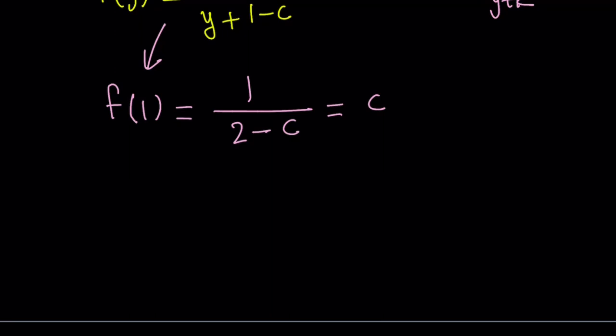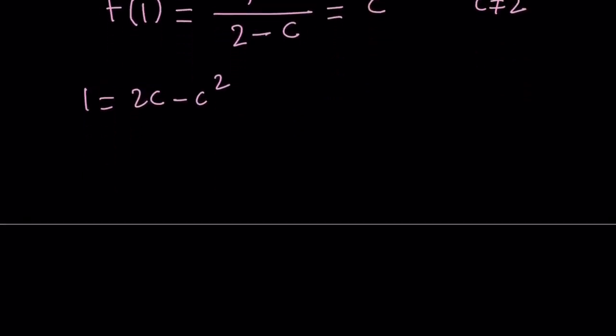What does that give us? It gives us a really nice equation. First, we have to note that c ≠ 2. Under those conditions, we can multiply both sides by 2 - c, and that gives us 1 = 2c - c². We can put everything on the left-hand side: c² - 2c + 1 = 0. Even though this gives us a quadratic equation, it has a double root. The roots coincide. We get a perfect square: (c - 1)² = 0, which implies that c = 1.